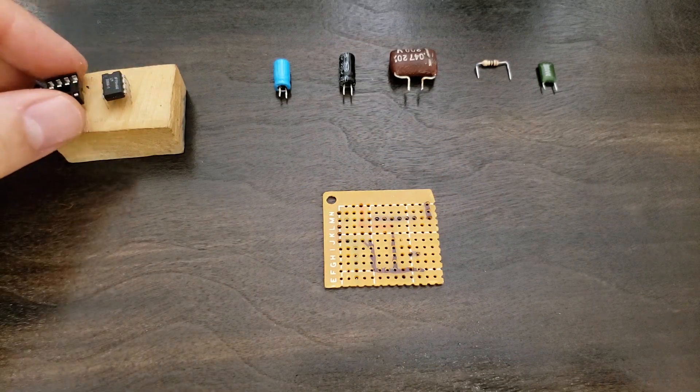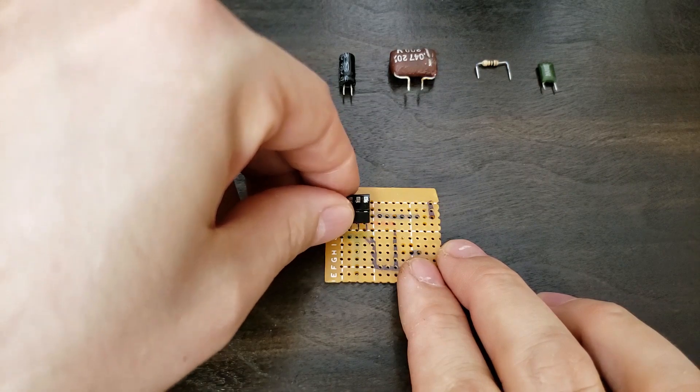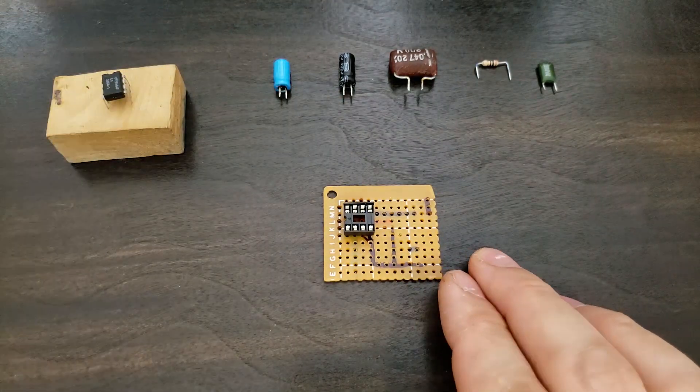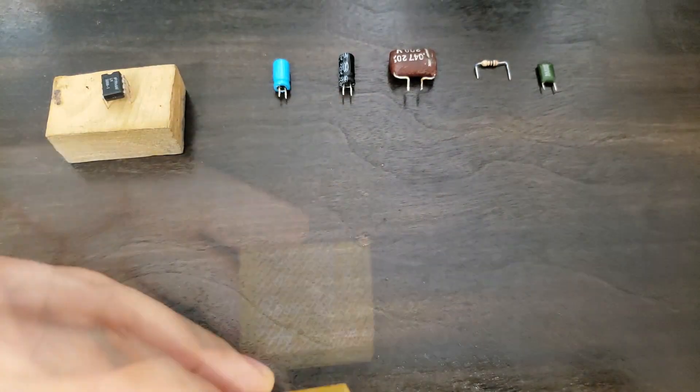Begin by inserting just the chip socket. Spread out a few pins to keep it in place before soldering.